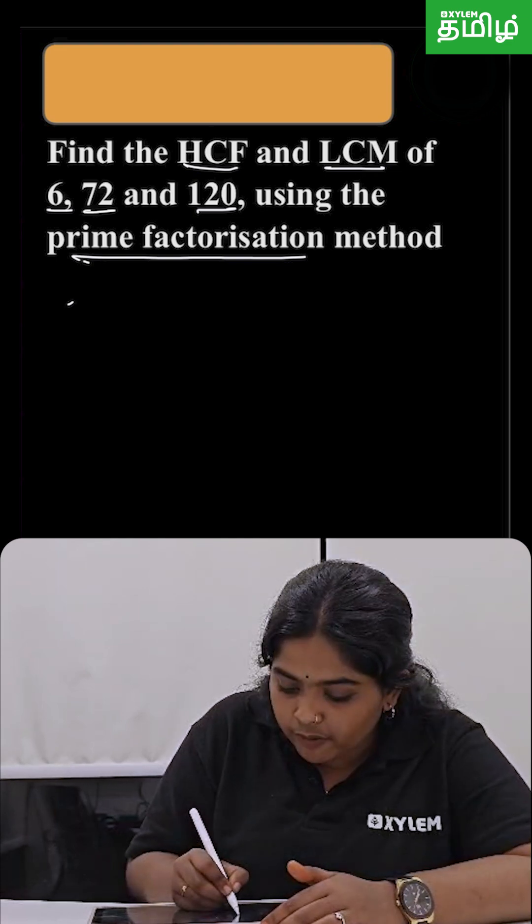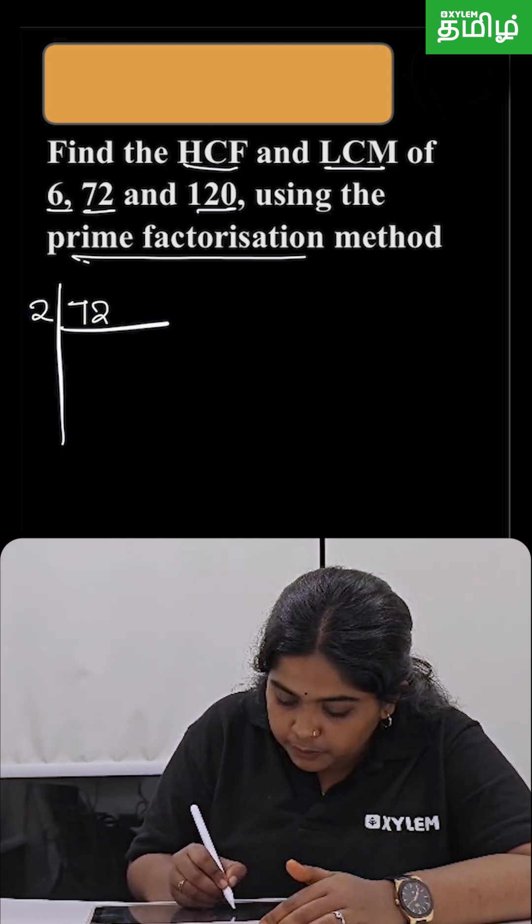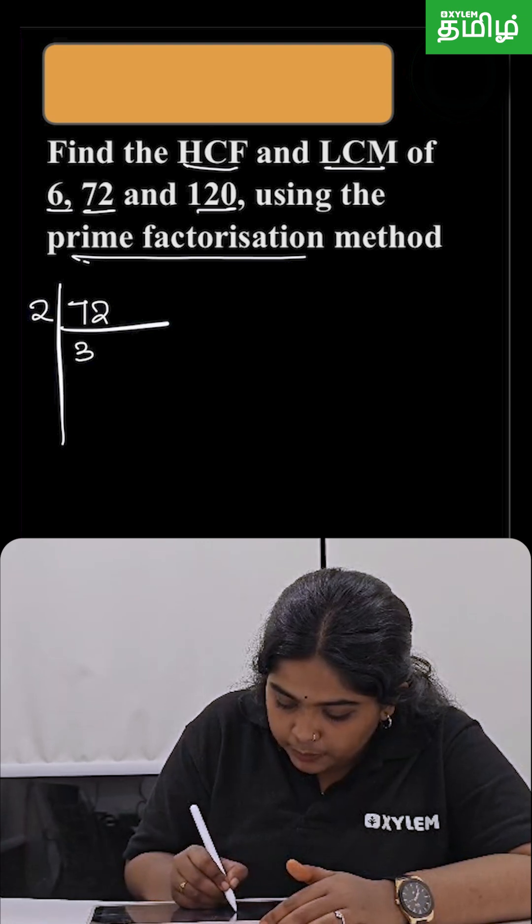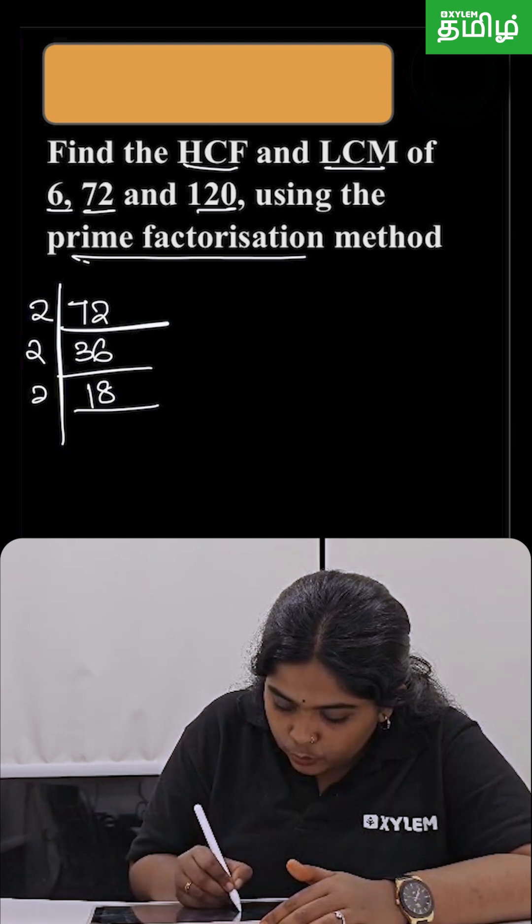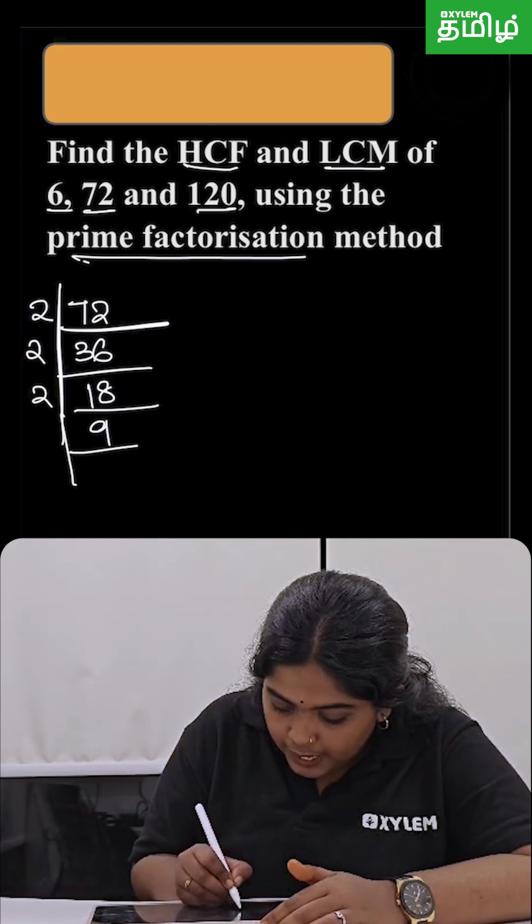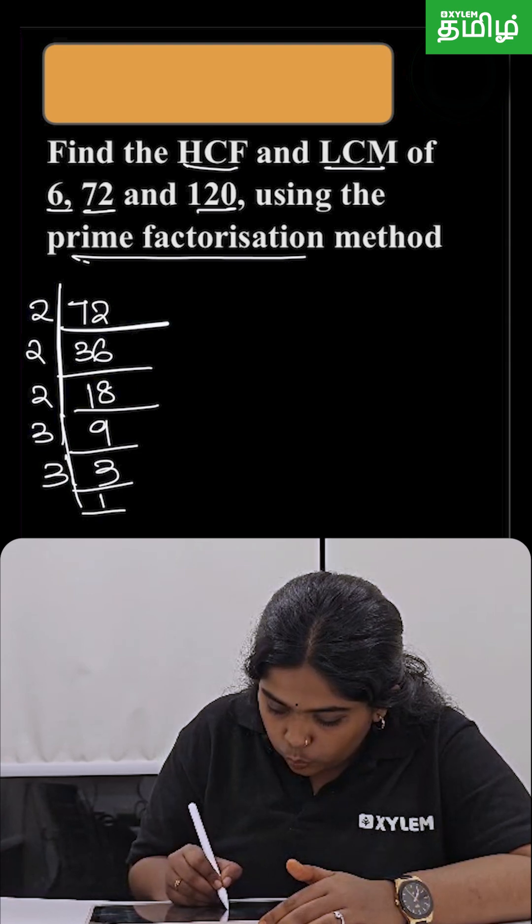So first I am going to do the prime factorization of 72. So it is 2 times 36, and 2 times 18. Again, 2 times 9, and let's take 3, 3, and 1.